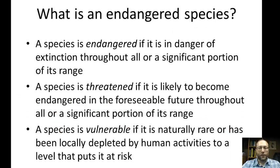First, a couple definitions. A species is listed as endangered if it is in danger of extinction throughout all or a significant portion of its range, and it's listed as threatened if it is likely to become endangered throughout all or a significant portion of its range in the foreseeable future. A species is considered vulnerable if it is naturally rare or if it has been locally depleted by human activities to a level that puts it at risk.